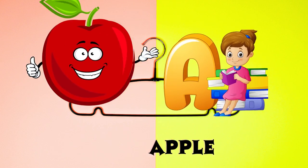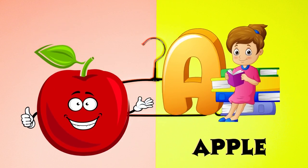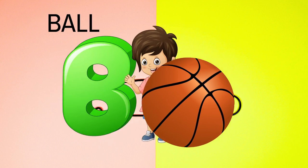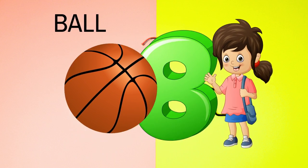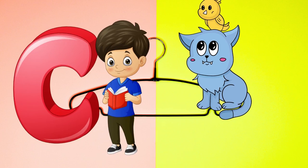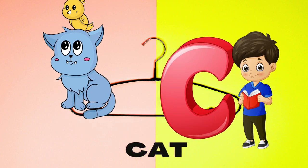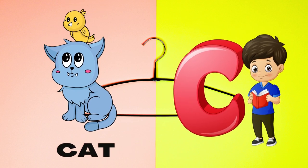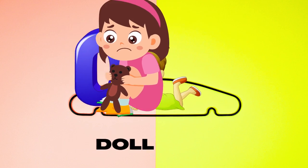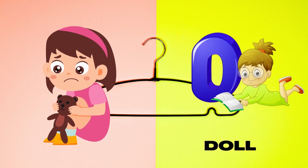A is for apple, a-a-apple. B is for ball, b-b-ball. C is for cat, c-c-cat. D is for doll, d-d-doll.